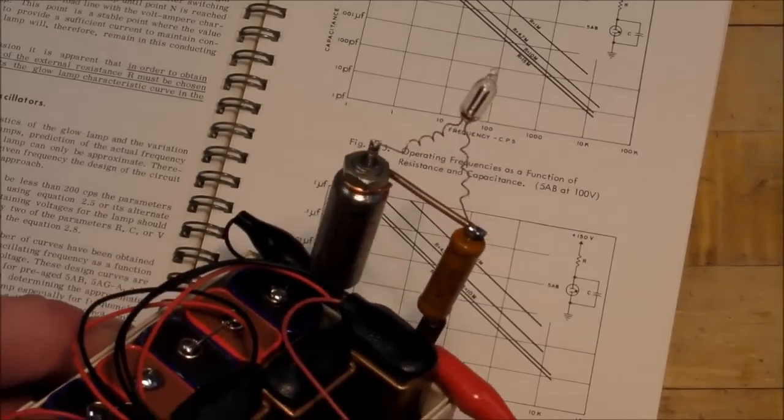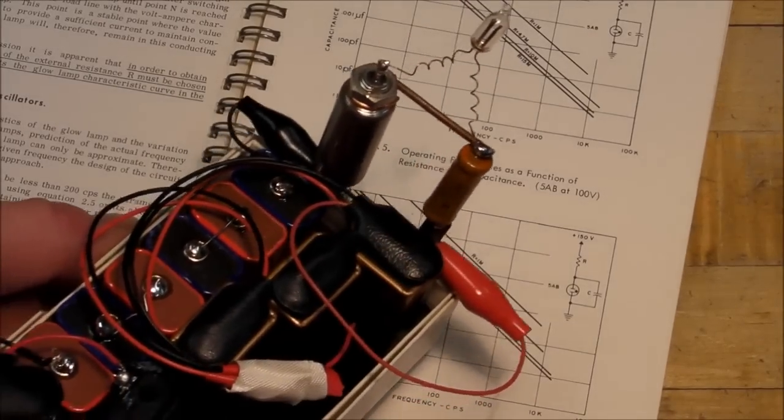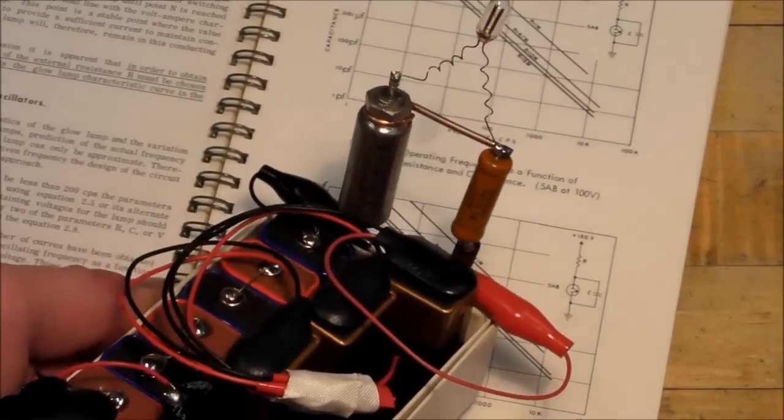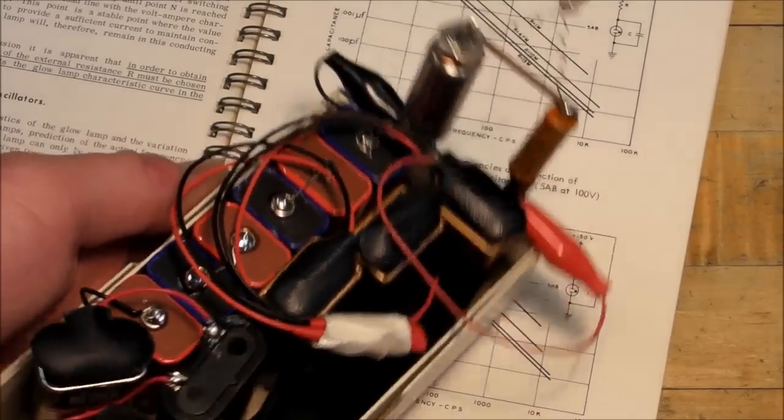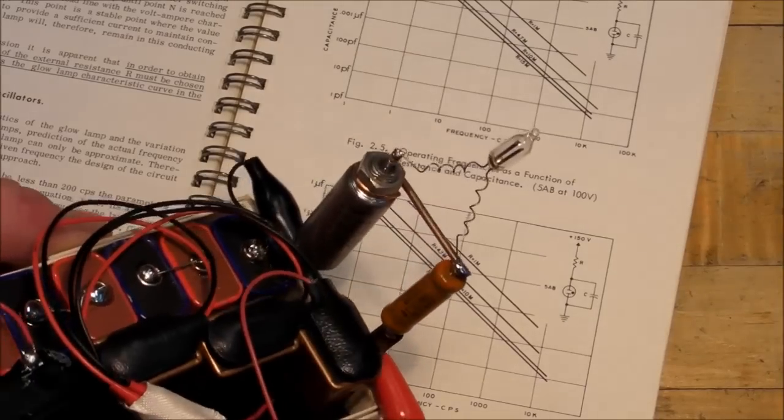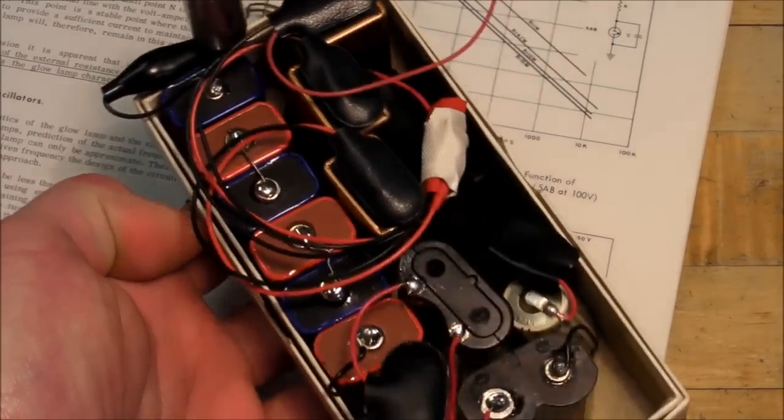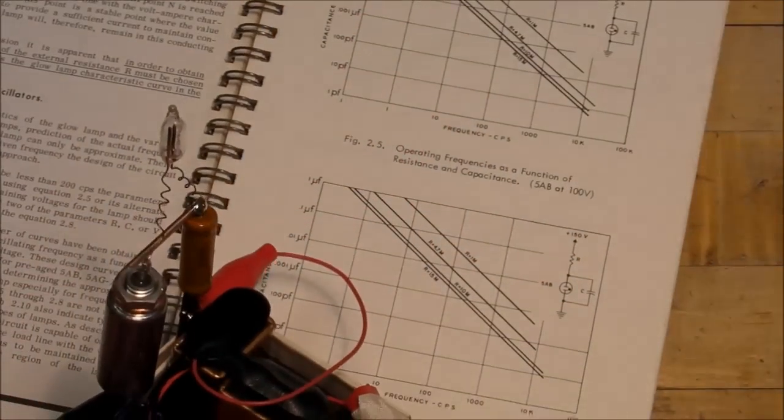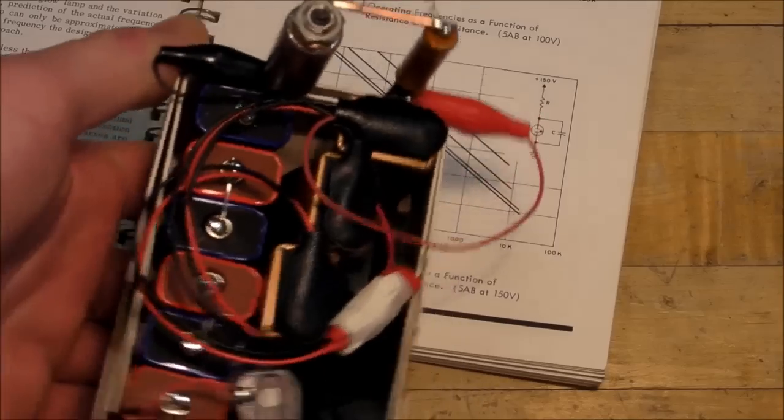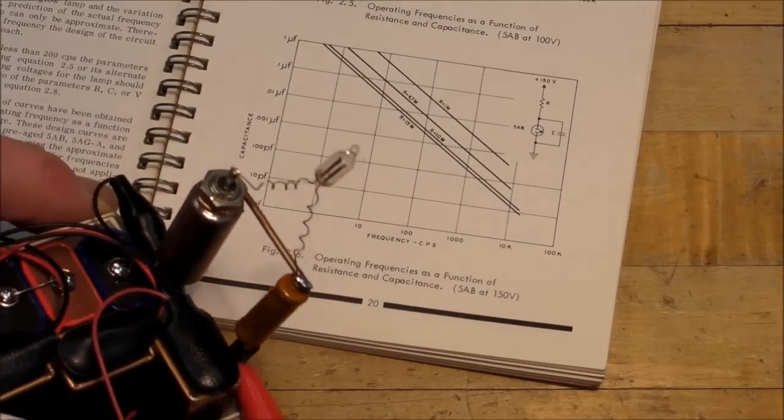But if these batteries were all brand new, then I could expect this thing to last continuously for a year or more. But we'll see how many weeks or months I actually get out of these batteries. I might have to replace a few of them because they're going to drain at different rates. But that's it, that's my neon lamp flasher circuit.